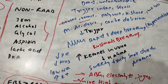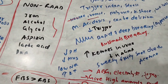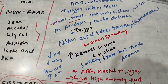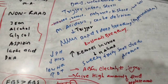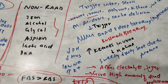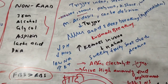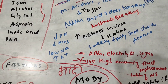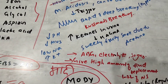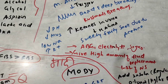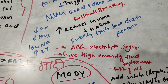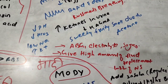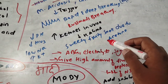Metabolic acidosis triggers rapid and deep breathing called hyperventilation, also known as Kussmaul breathing. Due to increased ketones, the urine shows a sweet, fruity smell due to deposition of acetone.